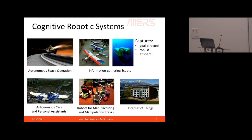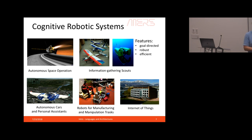We want robustness. We also want these systems to be efficient, because they're often operating in environments without a lot of resources. But as soon as you start optimizing the system, it tends to become brittle. We want the system to understand the risks incurred by optimizing and make sure it operates within a level of bounded risk.